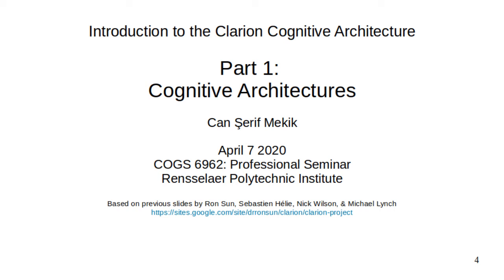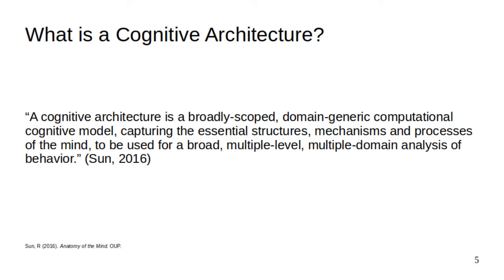Before we delve into the details of Clarion, let's first consider why cognitive architectures may be a worthwhile pursuit. In one sentence, a cognitive architecture may be described as a broadly scoped, domain-generic computational cognitive model capturing the essential structures, mechanisms, and processes of the mind to be used for a broad, multiple-level, multiple-domain analysis of behavior.